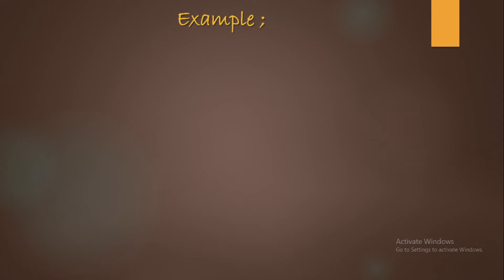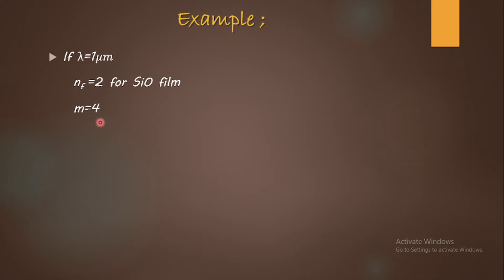Taking an example: wavelength of radiation used is 1 micrometer, refractive index of the silicon oxide film n_f = 2, and m = 4 (order of maximum or minimum). For these values the thickness comes out to t = 1 micrometer of silicon oxide film, using the formula 2m·λ / 4 = n_f · t, rearranged as t = m·λ / (2·n_f).